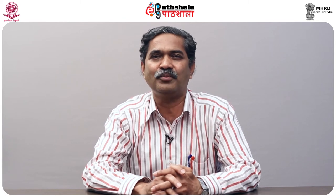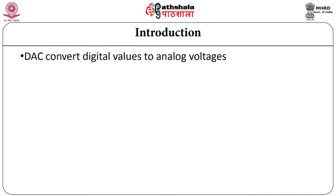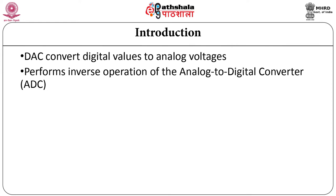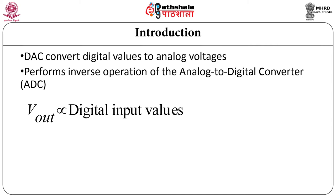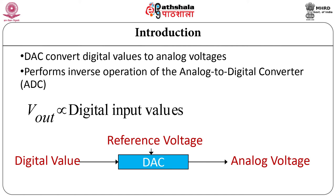In this module, we are going to study first different techniques of converting digital signal into equivalent analog form. A digital to analog converter converts digital values to equivalent analog voltages. It performs operations which are opposite to ADC. In case of DAC, V_out is proportional to digital input values. As shown in the block diagram, DAC has digital value as input, and by having a suitable reference voltage, those digital values are converted into equivalent analog voltages.